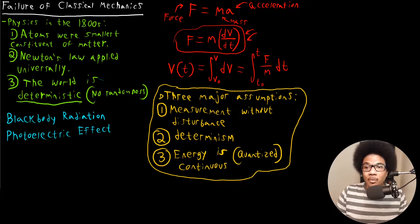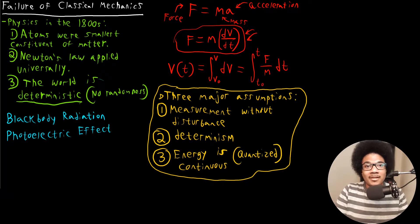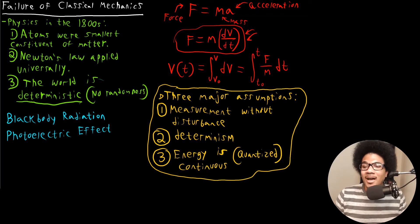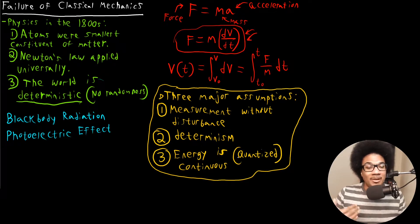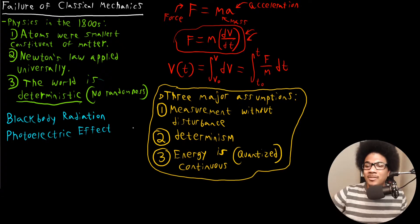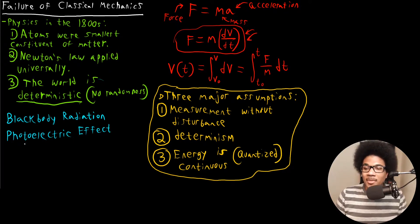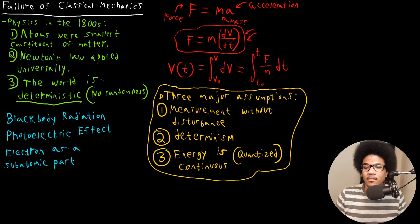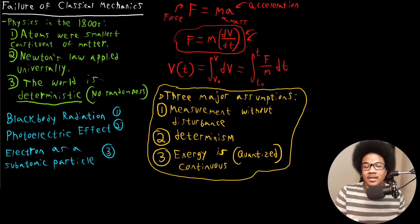So like I was talking about earlier, you shine light on an object. So if you shine light on a metal object, what you can do is create what's known as a photoelectron. It's an electron that's ejected from the surface of a metal. That effect is poorly described by classical mechanics. Only when energy is quantized, can you describe the photoelectric effect. And the other one is just the existence of the electron as a subatomic particle.